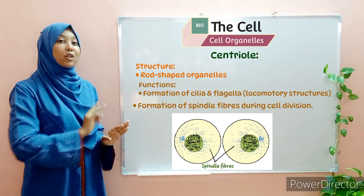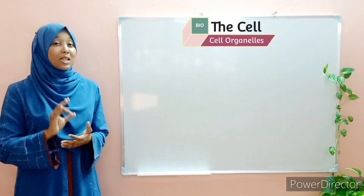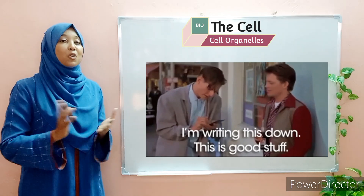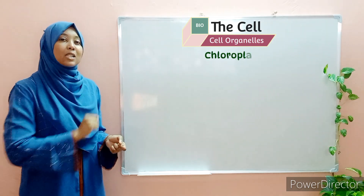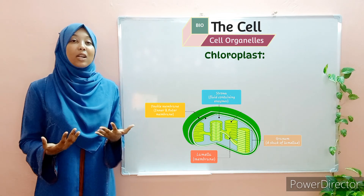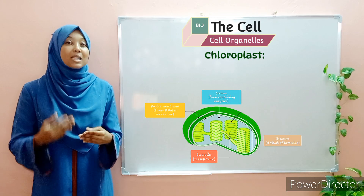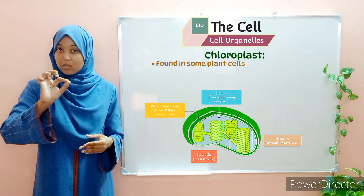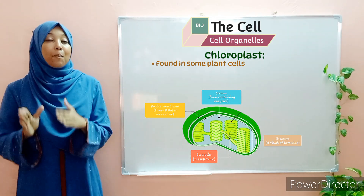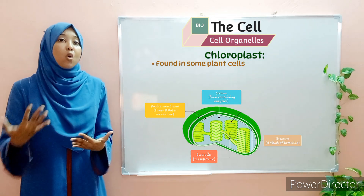Those are the two functions of centrioles. Moving on to our next organelle — just a reminder, if you want to take notes or write down any points, kindly pause the video and do so. Our next organelle is the chloroplast. Chloroplasts are found in some plant cells, but not all, because some plants don't have chloroplast. How would you know whether a plant contains chloroplast or not?